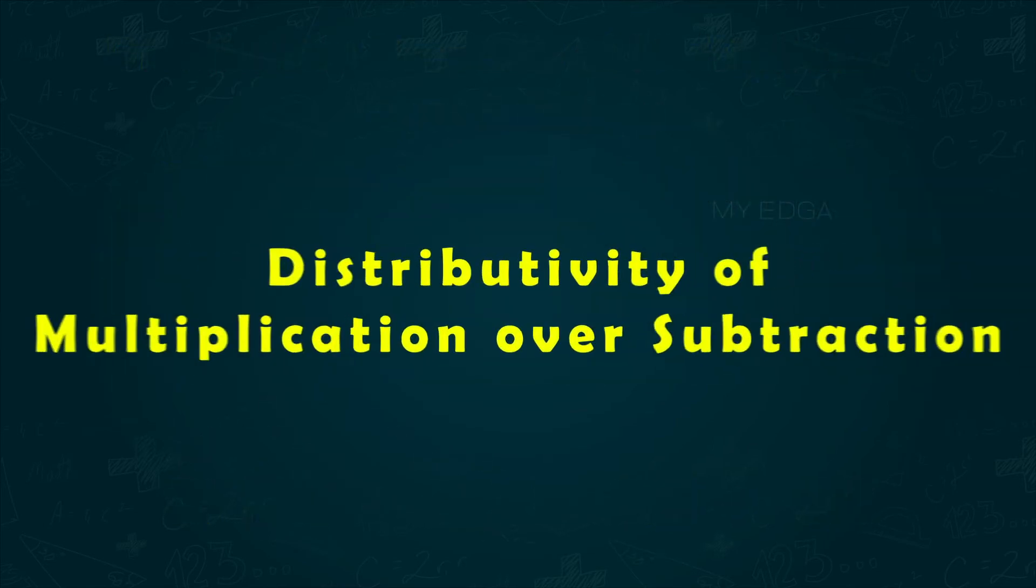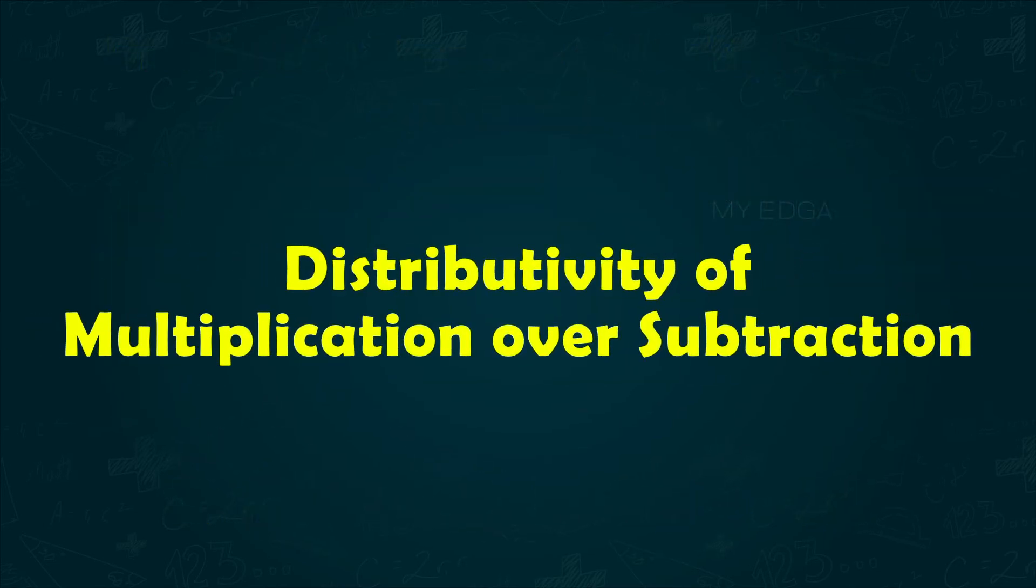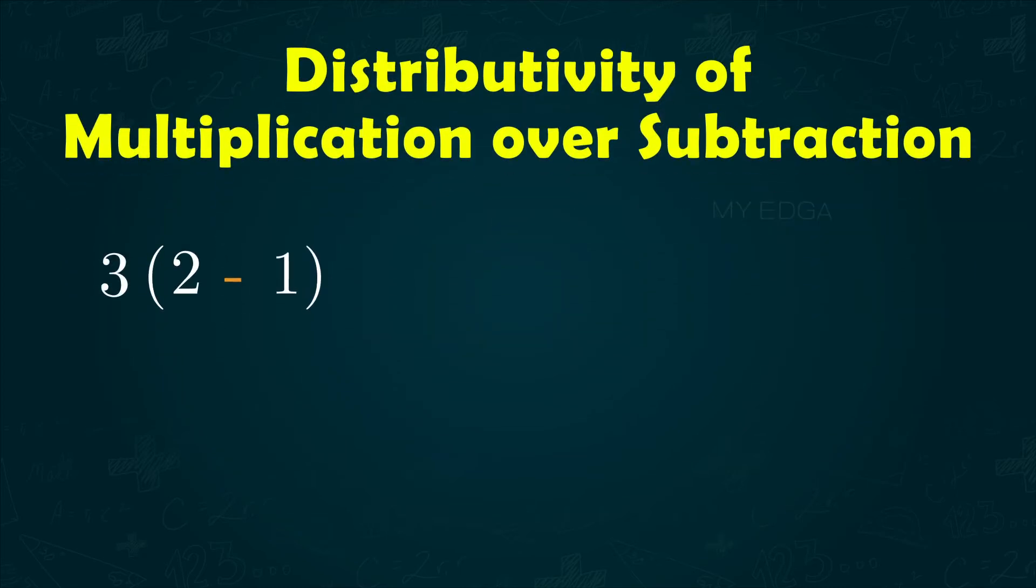The property is also applicable to subtraction. Let's see example: 3 into (2 minus 1). 2 minus 1 is 1, and 3 times 1 equals 3.